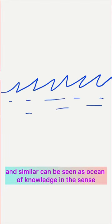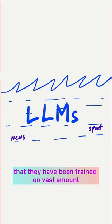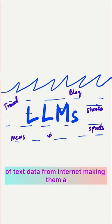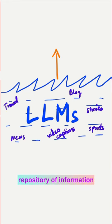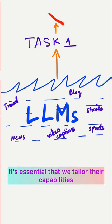Language models like GPT-3 and similar can be seen as an ocean of knowledge in the sense that they have been trained on vast amounts of text data from the internet, making them a repository of information and language understanding. It's essential that we tailor their capabilities to specific tasks.